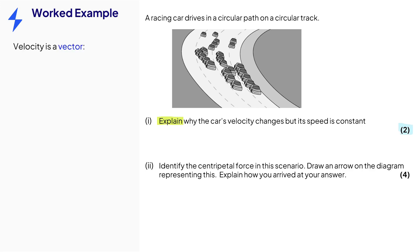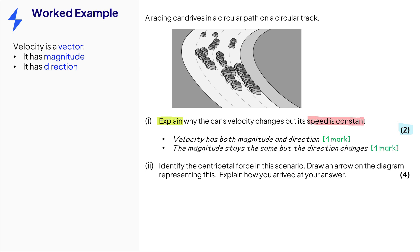Let's remember that velocity is a vector. It has magnitude and direction. Writing that down gains our first mark. Speed has magnitude but no direction. So, for changing velocity but constant speed, it has to be the direction that changes, while magnitude is constant. That's our second mark.